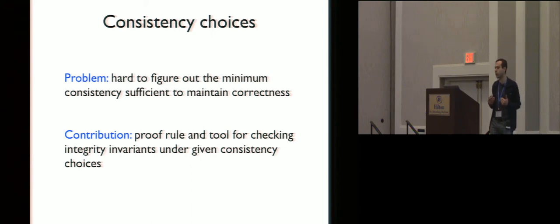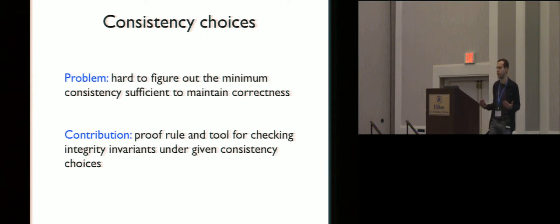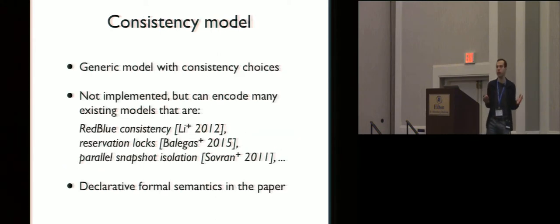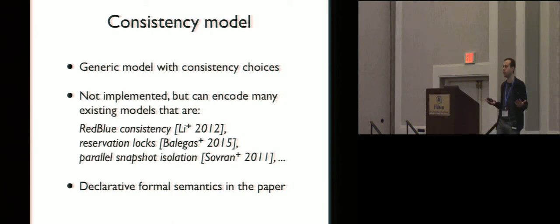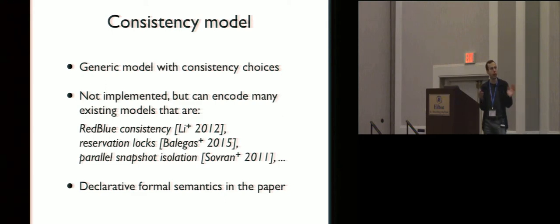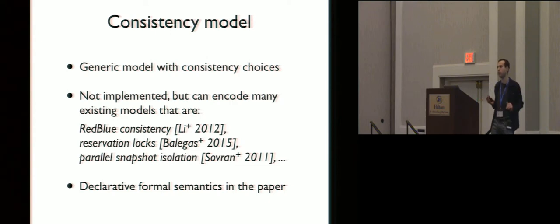Our contribution in the paper is a proof rule and a tool that help programmers in this task. They check that certain integrity invariants will be preserved given the chosen consistency levels for different operations. Our proof rule is developed for a generic model allowing consistency choices. This model is not implemented by any database in full generality, but it can encode many existing models that are implemented. I will present this consistency model fairly informally, relying on operational intuitions; a declarative formal semantics can be found in the paper.